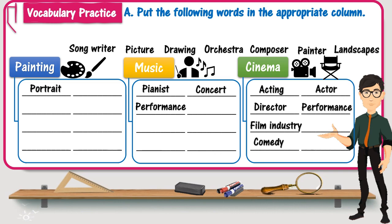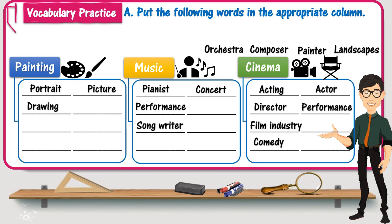Songwriter — from the word song and the verb to sing — so this matches with music. Picture, say a photo or a picture, the word is related to painting, just like drawing. Orchestra refers to a group of musicians that make music together, so the word is related to music. The next word is composer, someone who writes or produces music, so also related to music.